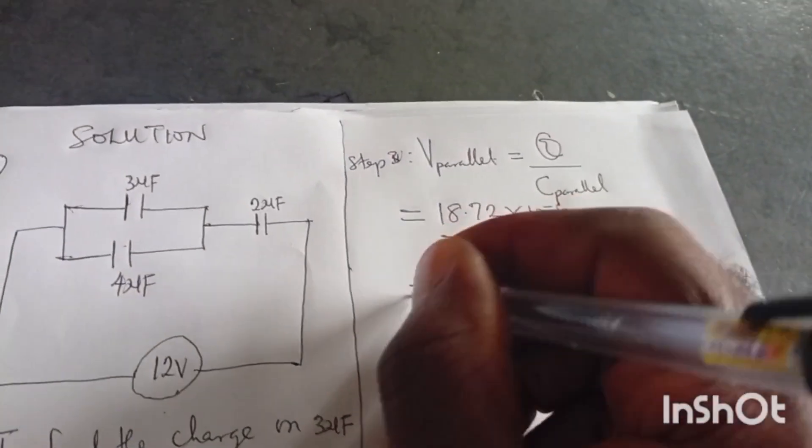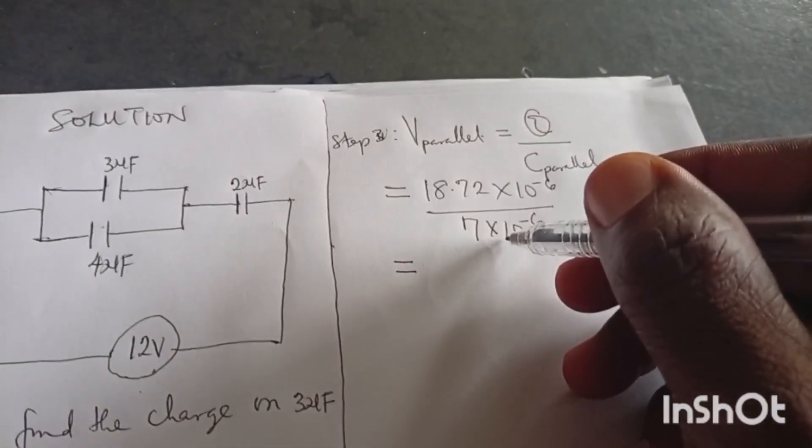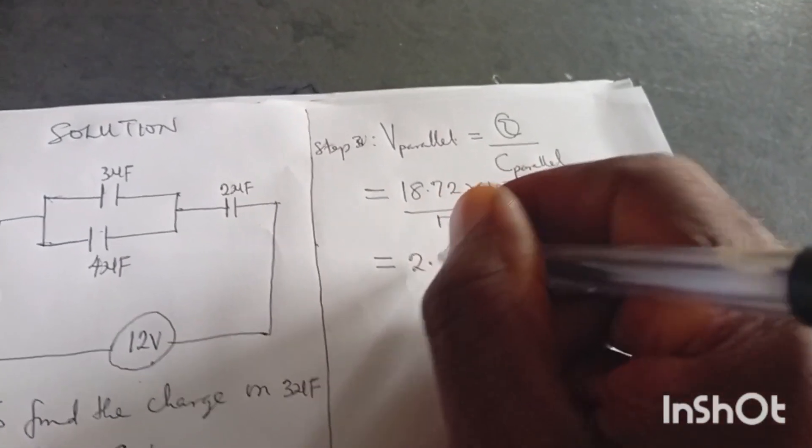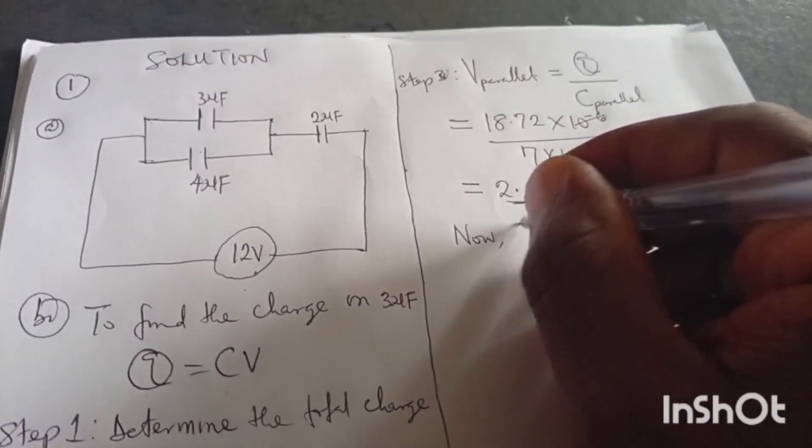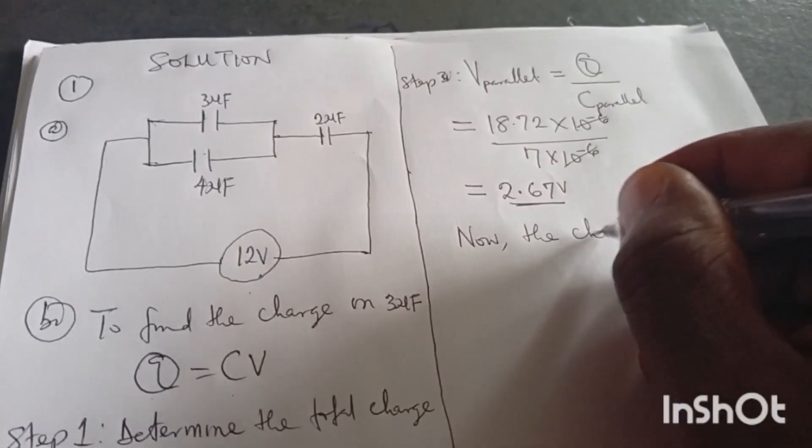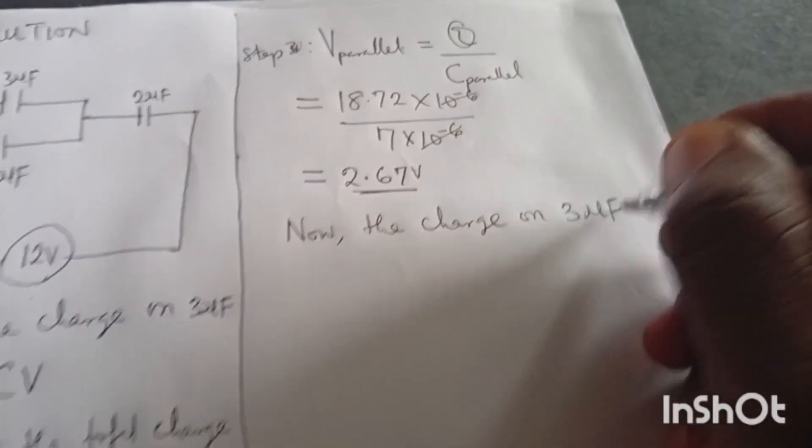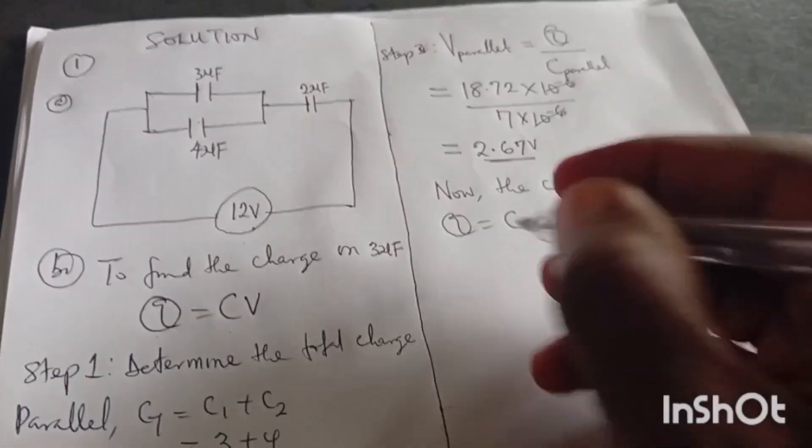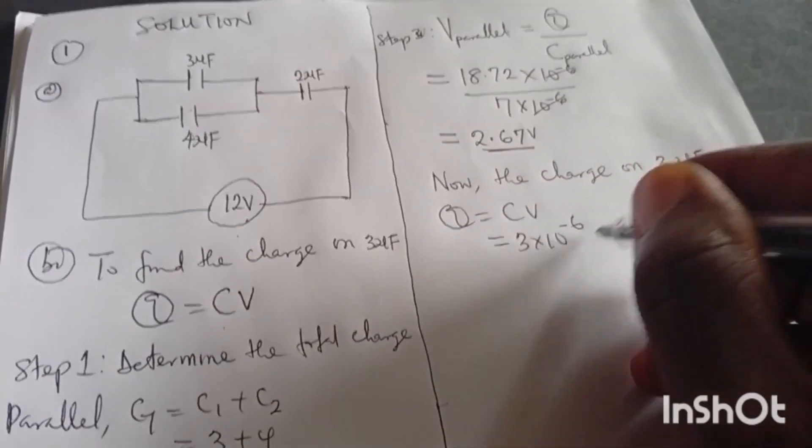So when you put the two together, notice, we cancel this one, and at the end of the day I'm having 2.67 as my voltage, 2.67 volts. Now I can get what I want to find now, the charge on 3 microfarad. With that formula, Q equals to CV. So the charge will now be 3 times 10 to the minus 6 times 2.67 volts.